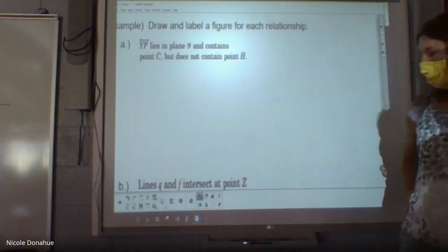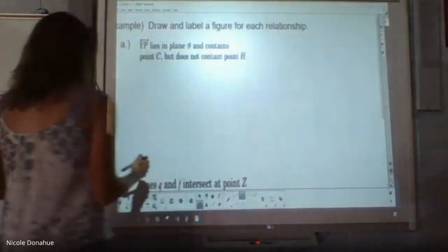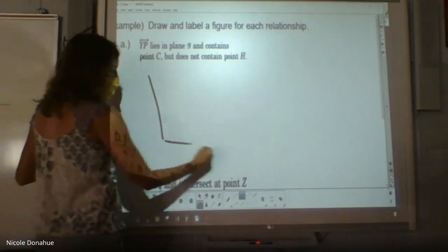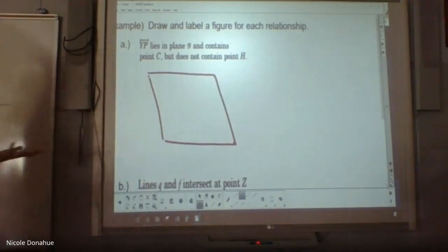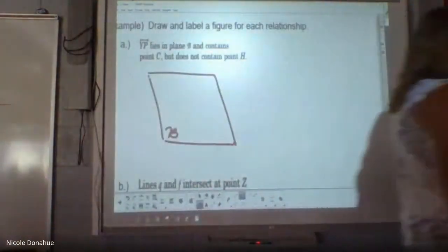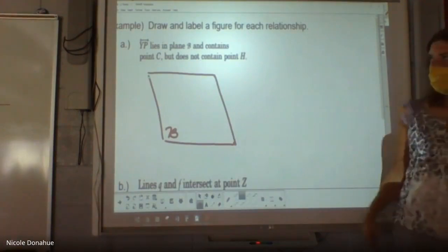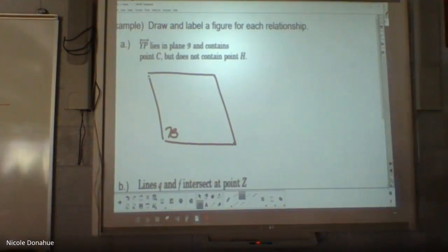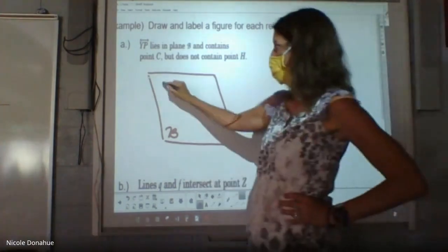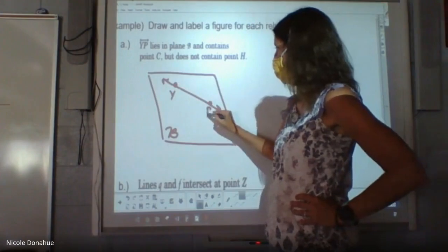So it says YP lies in plane B and contains point C, but does not contain point H. So what do you think I should draw first there? I might draw something else first. I want to lay out like kind of what I'm starting with here. So I'm going to draw a plane, not an airplane, like a regular plane here. It's just kind of trying to make it look like I have some space here. And I need to name it, so I'm going to put a B in the corner.